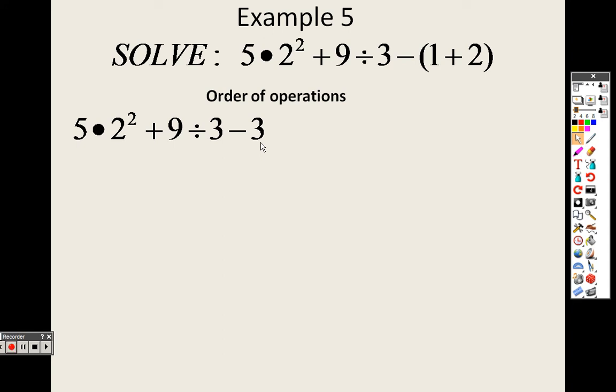Please excuse means E is next, E for exponents. So I have to do this now. 2 squared is 4. My is next for please excuse my, which is multiplication. So 5 times 4 is 20.